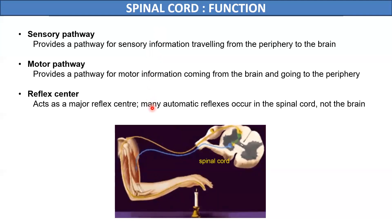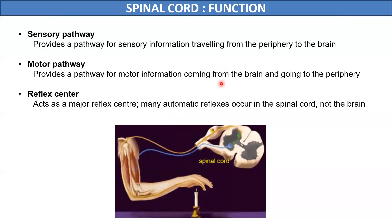For example, when we touch a hot object, we immediately move our hand. In these types of actions, there is no time for messages to reach up to the brain, and here the spinal cord performs simple reflexes so we are able to protect ourselves. So the function of the spinal cord is to act as a sensory as well as motor pathway and also as a reflex center.